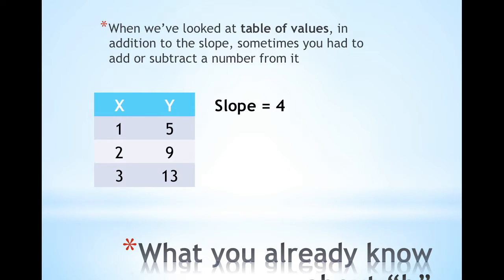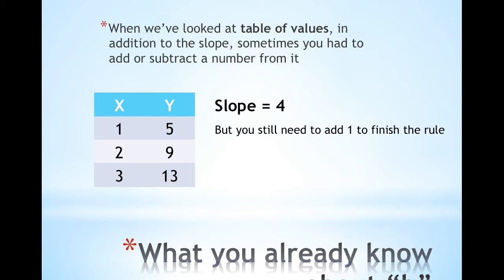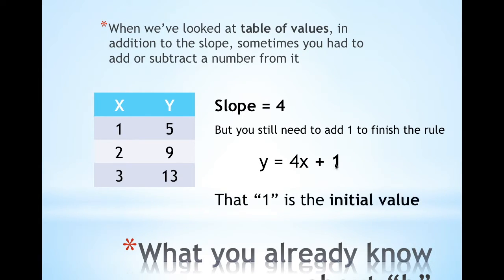Here's a table of values. You know the slope is 4 by whatever way you found it, but you still need to add 1 to finish the rule because 1 times 4 doesn't give you 5. So in this case you knew to add 1, and so your B value is 1. 1 is also called the initial value.